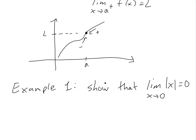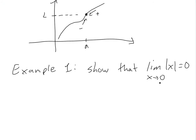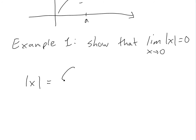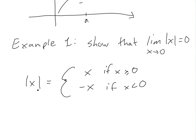The first example says: show that the limit of absolute value of x as x approaches zero is equal to zero. To do this, we break absolute value of x into separate functions. Absolute value of x equals x when x is greater than or equal to zero, and equals negative x when x is less than zero — so it's always positive.